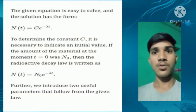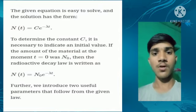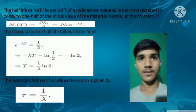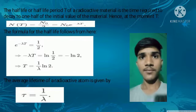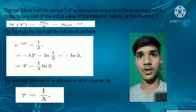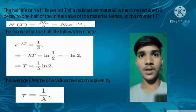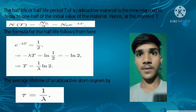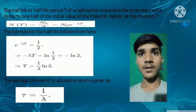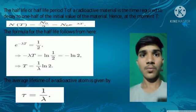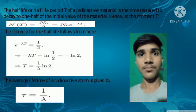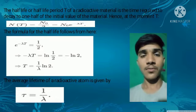Further, we introduce two useful quantities that follow from the decay law. The half-life period T of a radioactive material is the time required to decay to one half of the initial value at moment T = T₁/₂. The formula for the half-life follows from this relationship.